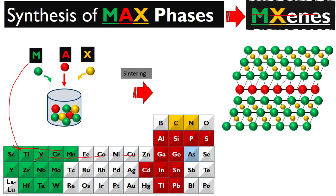A is basically group three elements - group A elements from group IIIA to group VIA. X is basically carbon or nitrogen.